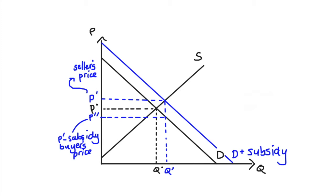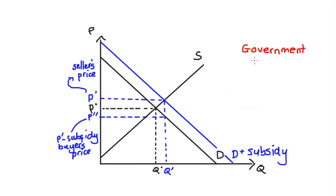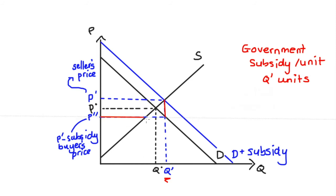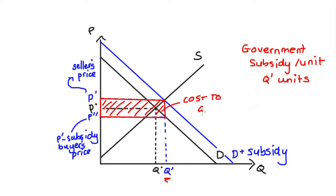As a result of the subsidy: we're trading more — Q prime instead of Q*; the sellers are getting a higher price per unit, P prime instead of P*; and the buyers are paying a lower price per unit, P prime prime instead of P*. To think about welfare, we consider consumer surplus, producer surplus, and what's happening to the government, since the government is paying for this subsidy. The government gives a subsidy per unit across Q prime units, so the cost of the subsidy to the government is this rectangle, with base Q prime and height equal to the amount of the subsidy: Q prime times the subsidy.